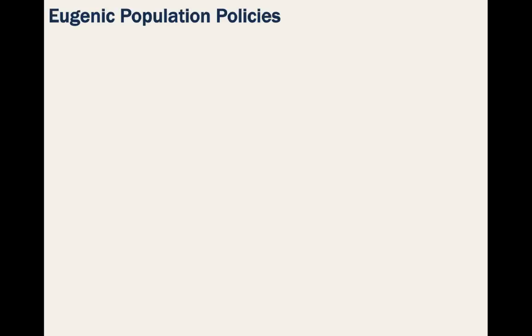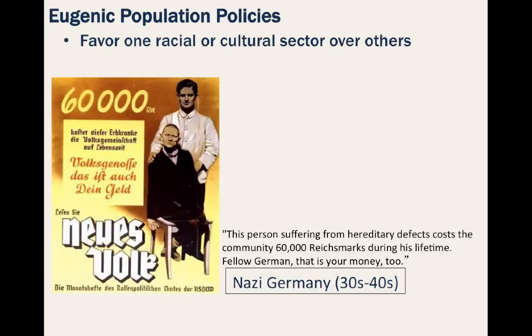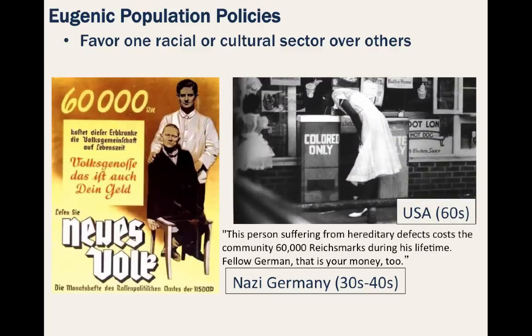Eugenic population policies are designed to favor one racial, ethnic, or cultural sector over others. The Nazis in Germany were a clear extreme example — favoring the German people, especially of Aryan appearance, they deemed all other races inferior, seeking to eliminate them, ultimately resulting in the Holocaust. They also sought to eliminate those with disabilities, as seen in a poster from their euthanasia program running from 1939 to 1941. Other eugenic policies, such as the Jim Crow laws in the United States up until the Civil Rights Movement of the 1960s, were less extreme but still unjust, with some state governments setting up separate facilities for African Americans.